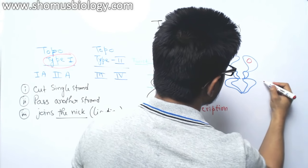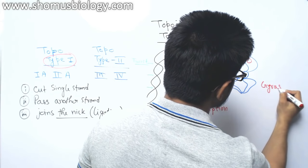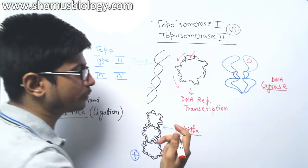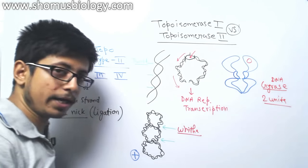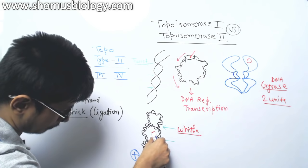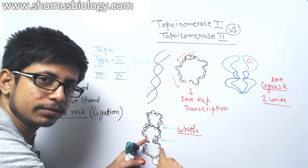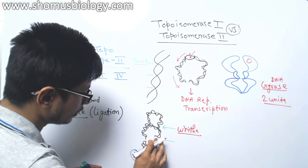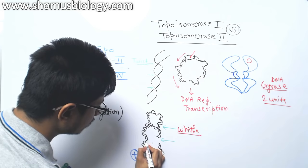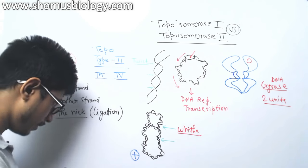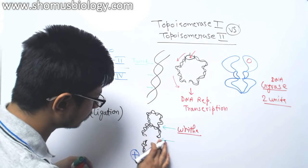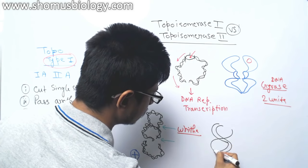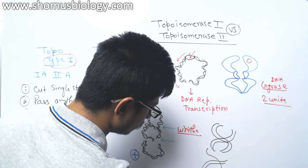So the job of topoisomerase type 2 — gyrase — is that it will introduce negative supercoiling by 2 units. What it does is cleave both strands of one DNA segment, pass the other double-stranded DNA through that gap, and re-ligate it. After the activity of gyrase, the strand that was in the back side will now be in the front, and vice versa.